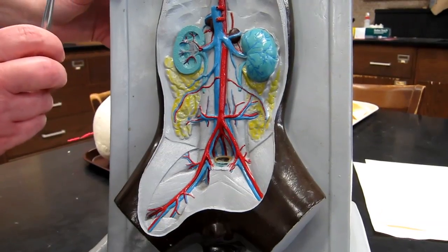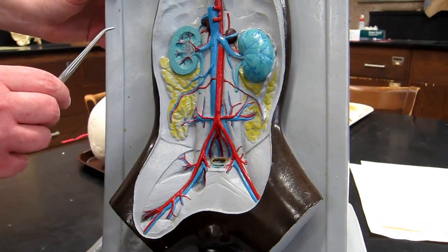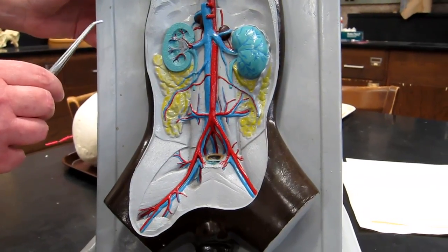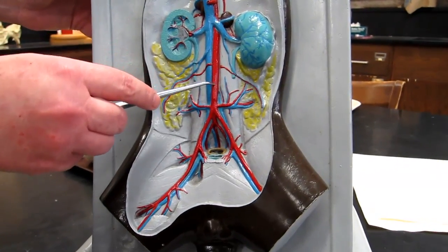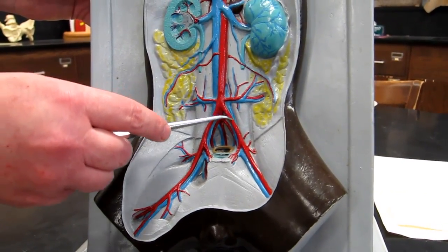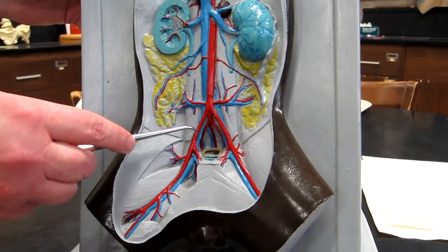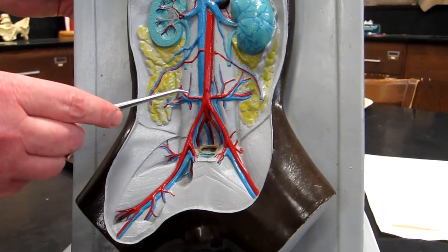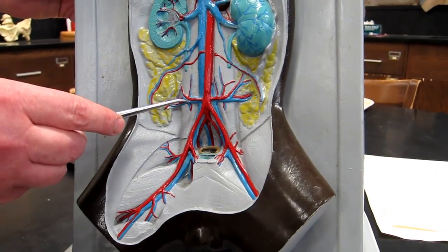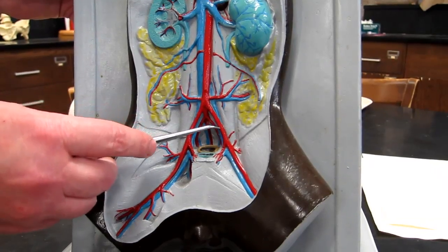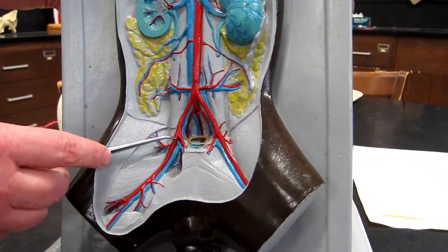Now another set of differences that we have when we compare the cat to the human: if you remember from the human, when you get to the inferior end of the abdominal aorta, it splits into two common iliac arteries. In the cat, there are no common iliac arteries. So in the cat, we're dividing into two external iliac arteries directly.